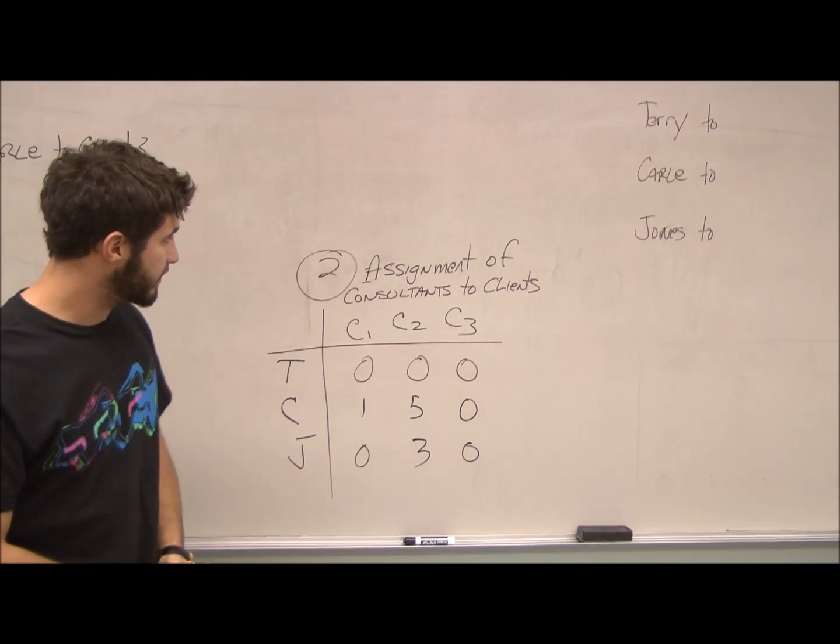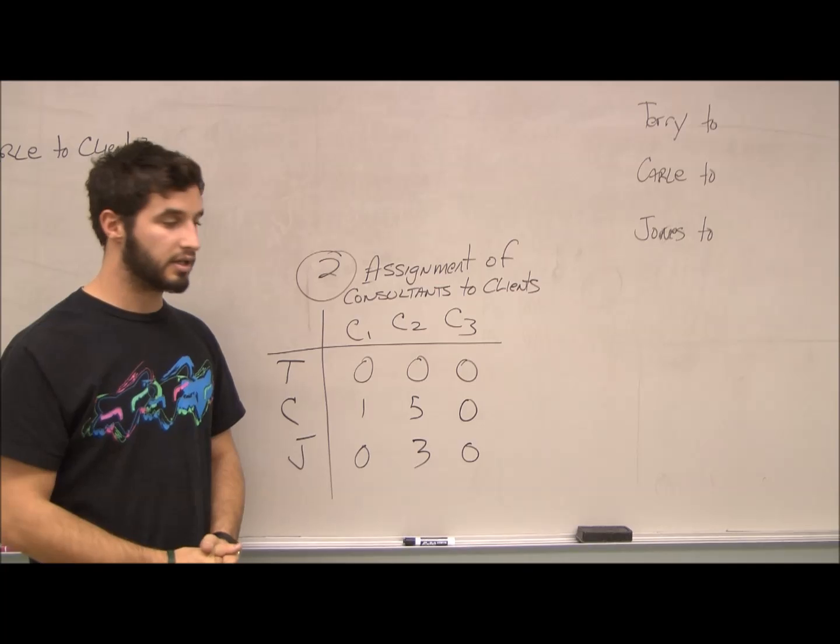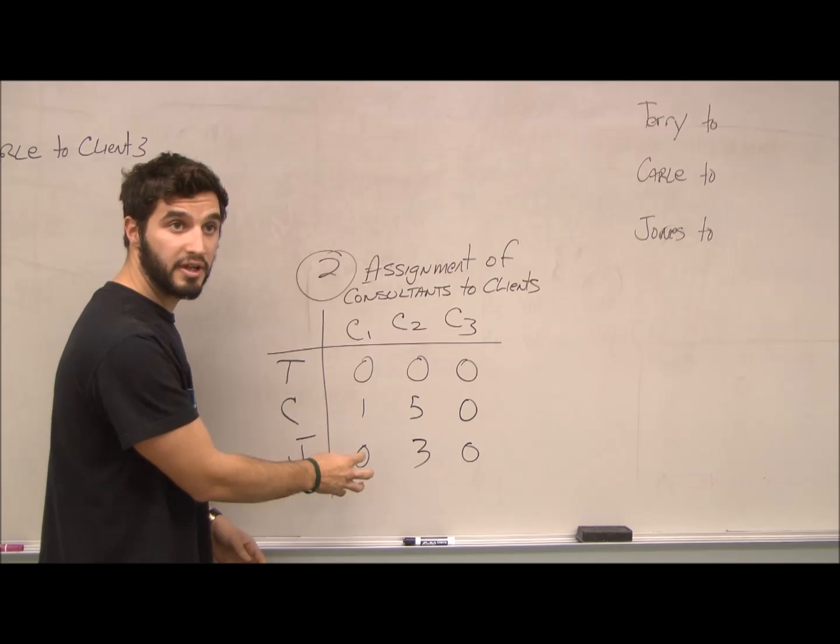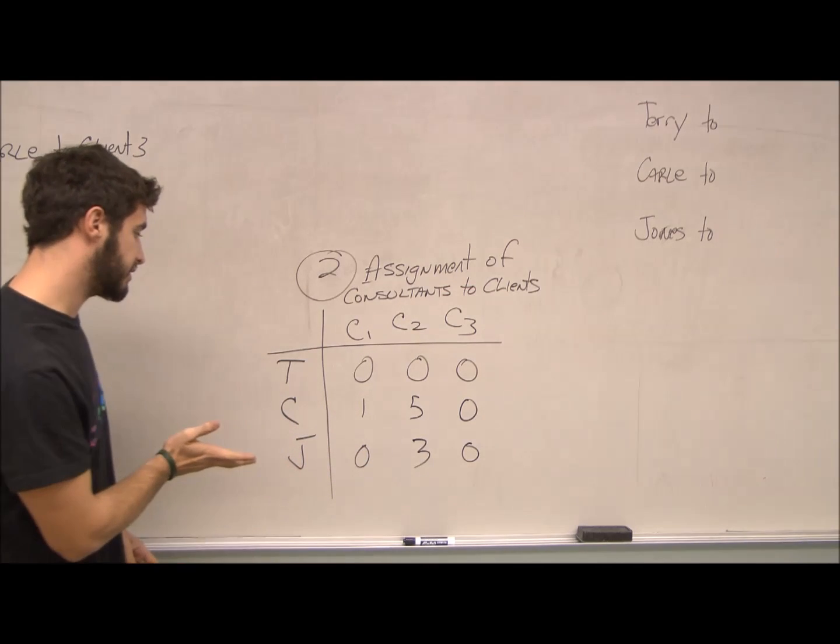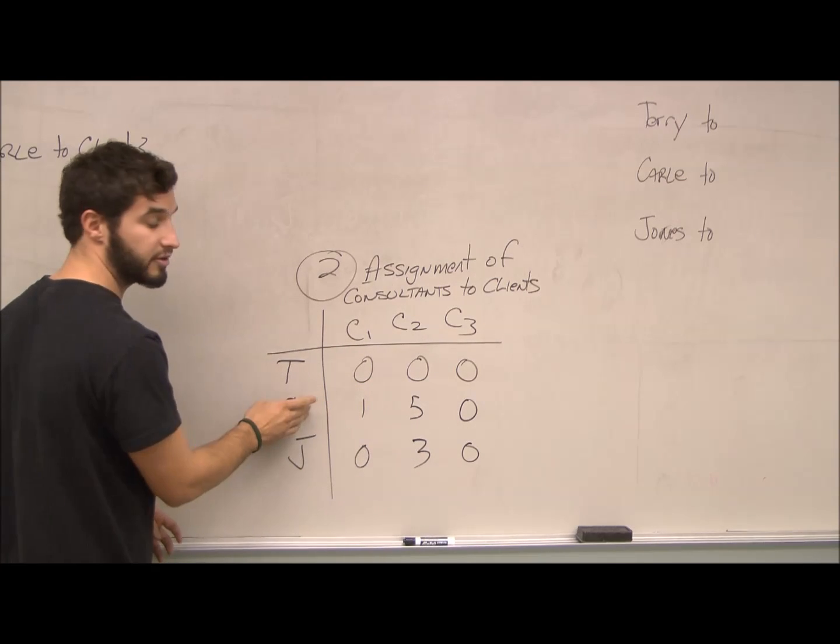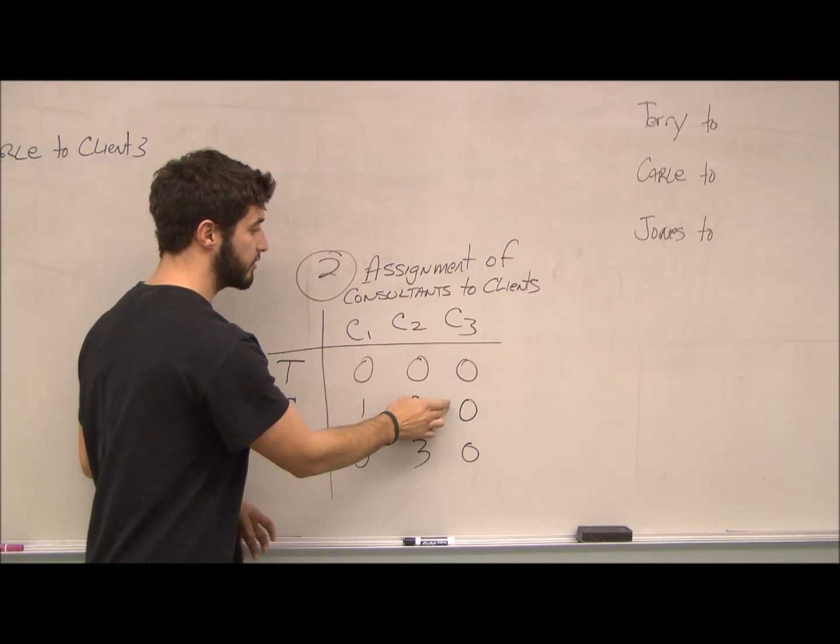So now we're moving on to the assignment of consultants to clients. As you can see, these zeros, they represent an assignment that can be done. We usually like to start off in the row that only has one assignment, meaning that this consultant can only be moved to one client.